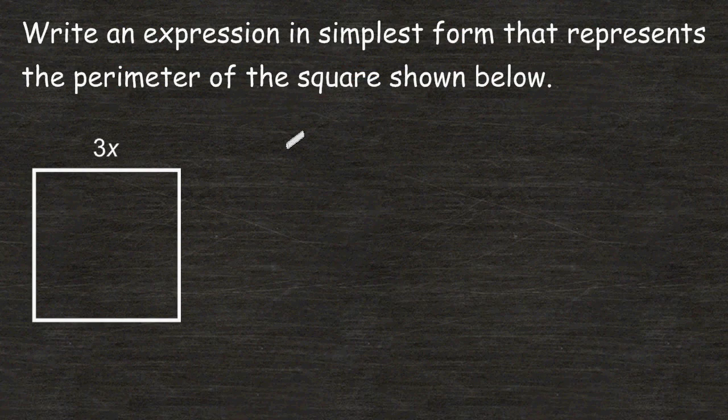For this problem, we are being asked to write an expression in simplest form that represents the perimeter of the square shown. Remember, perimeter is simply the distance around any shape or object.